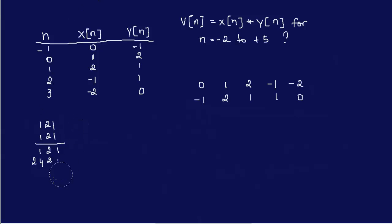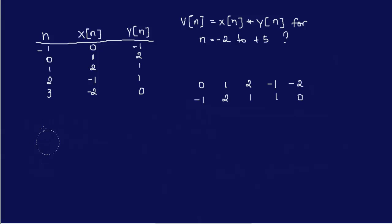Now, some people — and this is what they did in the book for the solution — started from the other side: 1 times 1 is 1, 1 times 2 is 2, 1 times 1 is 1, and then shifted from the left. I'm doing it the other way because that's how I learned it and I'm more comfortable with it. In any case, it's the same concept.